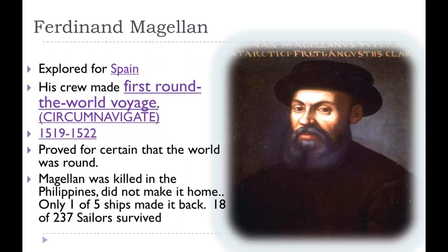Another Spaniard was Ferdinand Magellan. His crew made the first round-the-world voyage — they circumnavigated the globe. 'Circumnavigate' means to travel all the way around — circum meaning the outside of a circle, and navigate meaning guided travel. It took from 1519 to 1522 and proved the world was round. However, Magellan himself was killed in the Philippines — only one of his five ships made it back, and of 237 sailors who left, only 18 returned. Those 18 were actually the first people to circumnavigate the world.